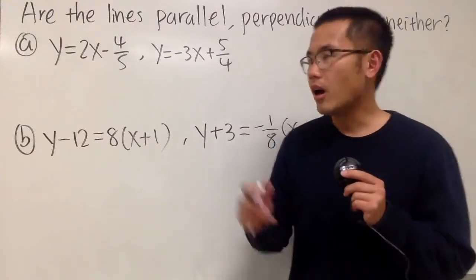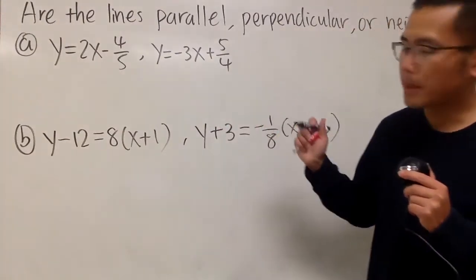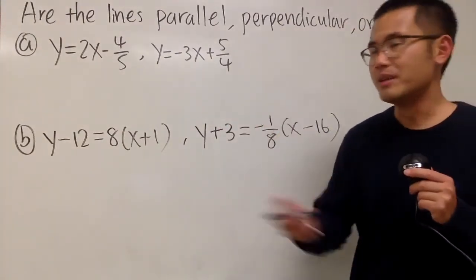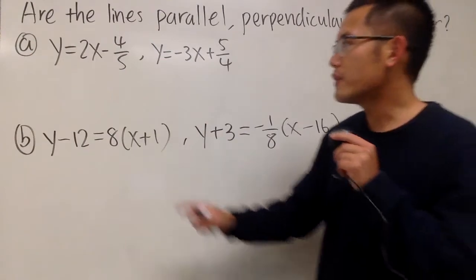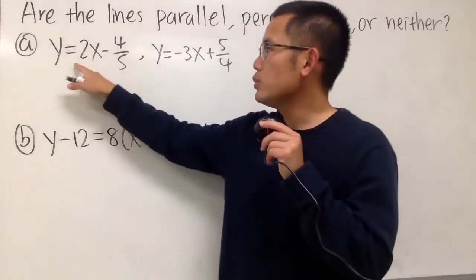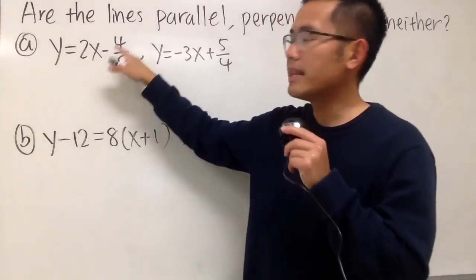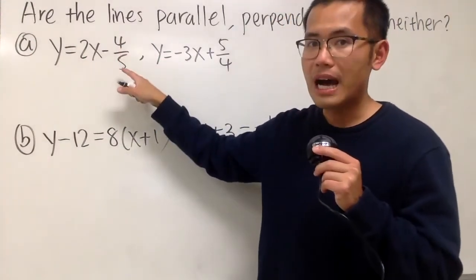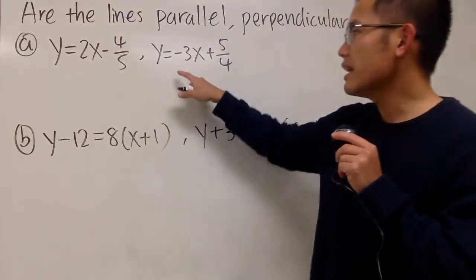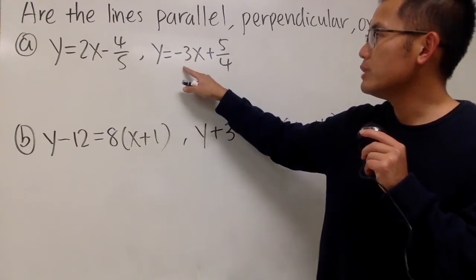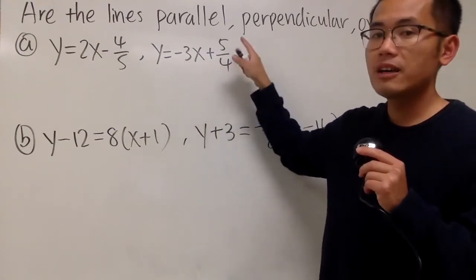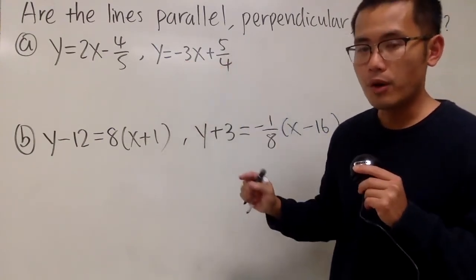We're going to see if the lines are parallel, perpendicular, or neither. This is the first question. First, we have y is equal to 2x minus 4 over 5, and the second line is y is equal to negative 3x plus 5 over 4.